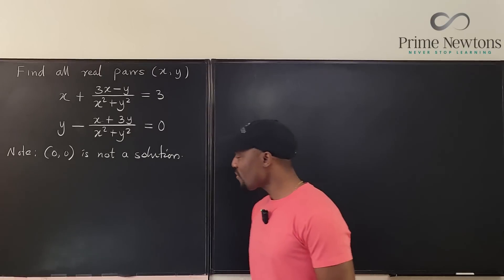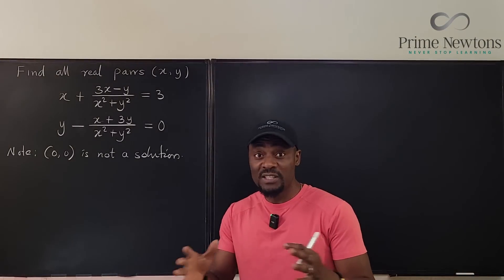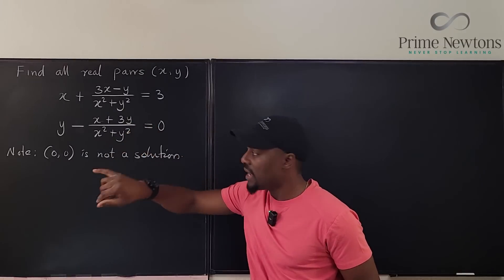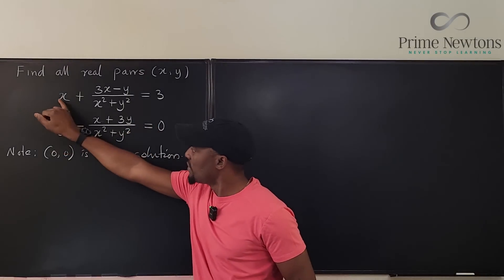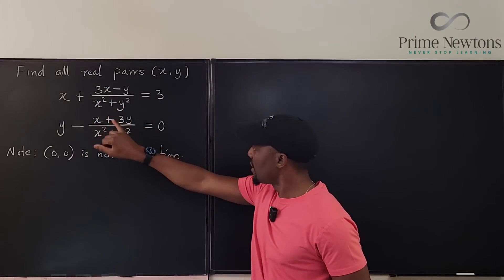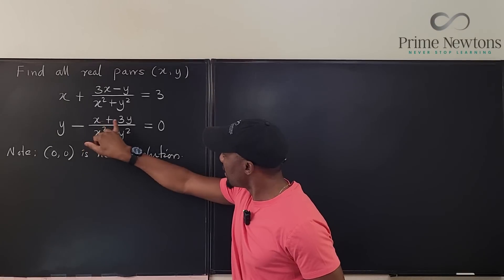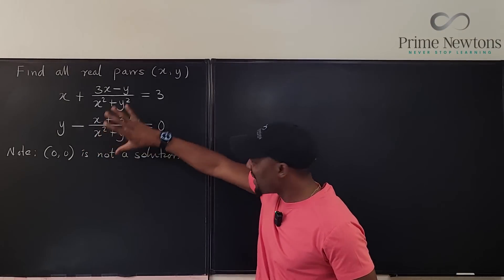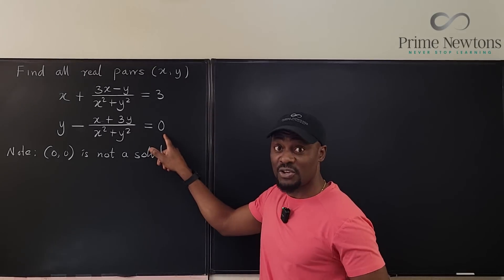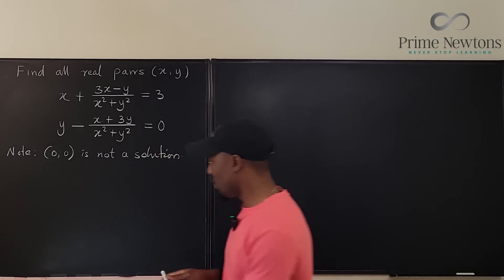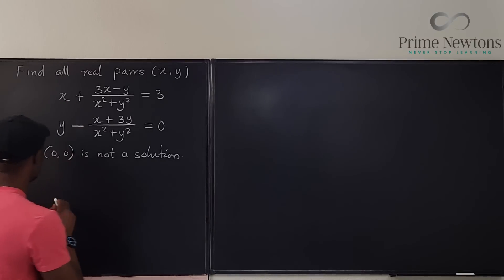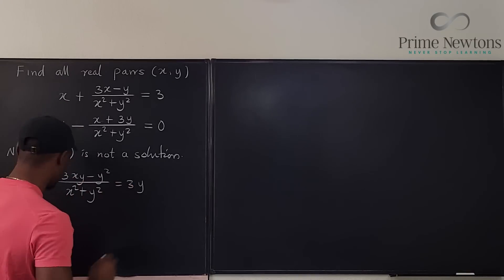What I'm going to do, in order to generate similarities between the two equations, is to multiply the first equation by Y and the second equation by X. That way this will become XY, and this is also XY. I'm going to have some XY or 3XY here, and 3XY also there. By the time we subtract, since they have the same denominator, things are going to clear out and the zero we have will make our life a lot easier.